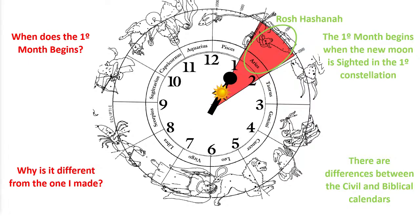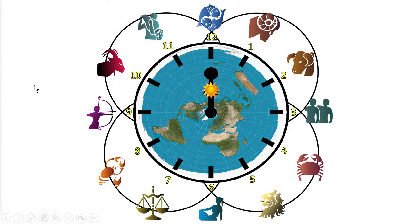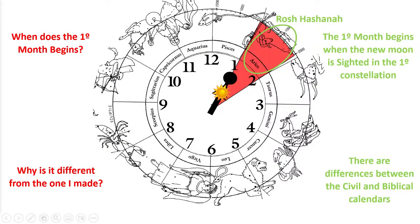I hope this has answered the questions people have raised about the sky clock. My sky clock is correct — Aries is the first, Libra the seventh, just as we saw, now corrected based on what God has said.